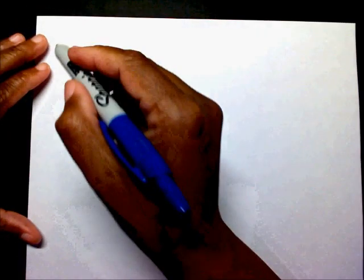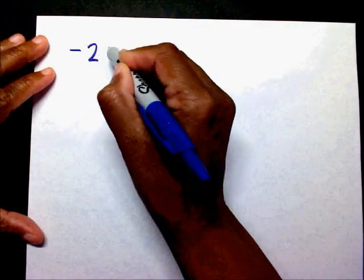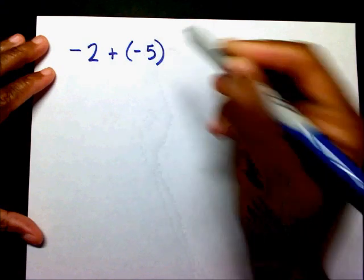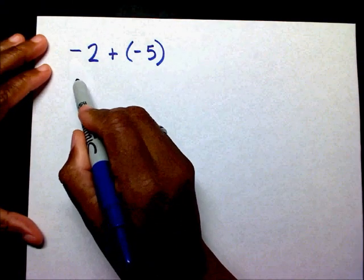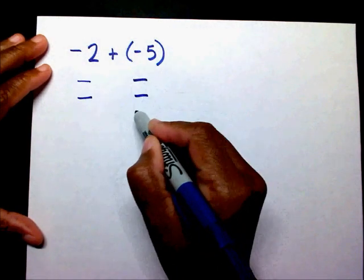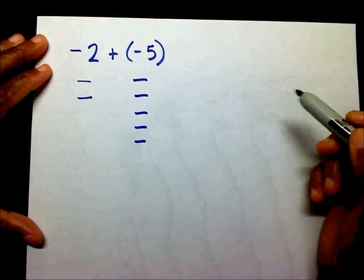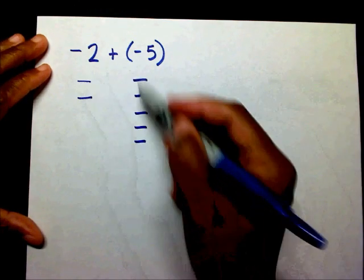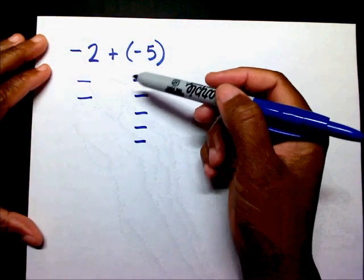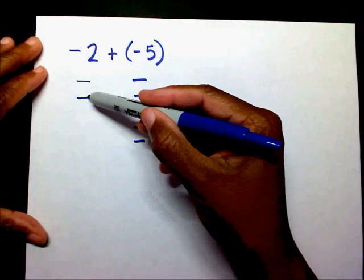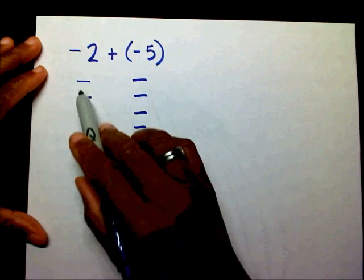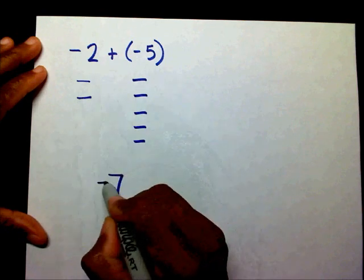What if I had negative two plus negative five? I have two negatives and I'm going to add to it five negatives. Since I can't create any zero pairs, I'm just going to combine what I have: one, two, three, four, five, six, seven. But it's not just seven — it's seven negatives. So the answer is negative seven.